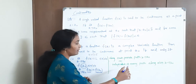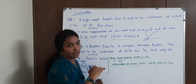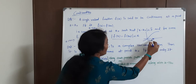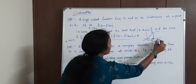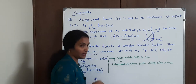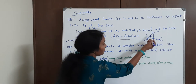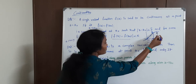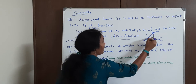Let me explain with a graph. Consider y equal to f of x as a function. As x approaches a, here a is a point and l is the limit. From x minus a (left-hand side) and x plus a (right-hand side), the limit values are both equal to l. The graph is unbreakable at that point.